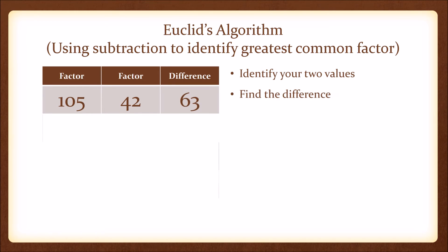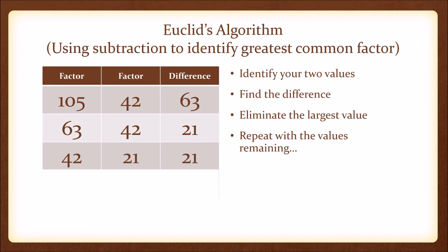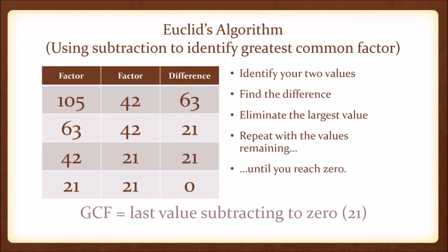Start off with two values. Find their difference and get rid of the largest value, in this case 105. Subtract again with what's left. Repeat that process until you get to zero. When you do, the last value that you subtracted to get to zero is your greatest common factor. In this case it's 21.